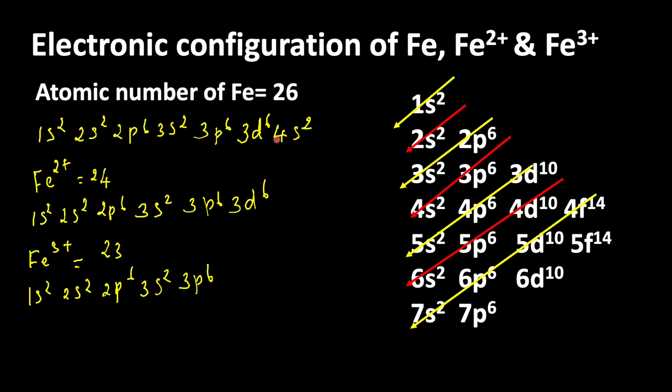So now 3d6 becomes 3d5. Count the electrons: 2 plus 2 is 4, plus 10 is 14, 12 plus 6 is 18, 18 plus 5 is 23. So this is the electronic configuration of iron, Fe2+, and Fe3+.